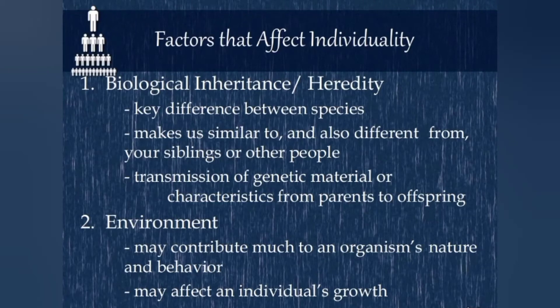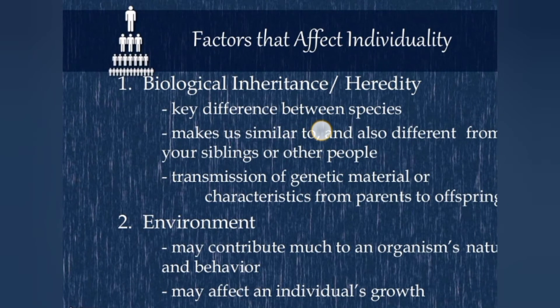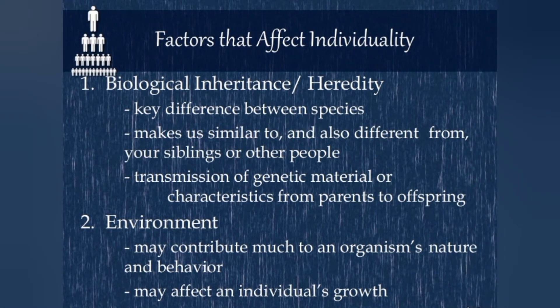Factors that affect individuality include biological and environmental factors. In biological inheritance, we can study the differences between species, as well as what makes us similar to or different from our siblings and other people. This involves the transmission of genetic individual characteristics from parent to offspring, including differences and similarities between species.